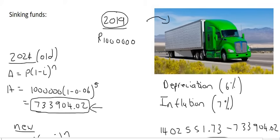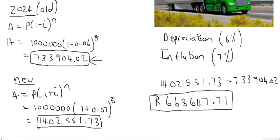The accountant approximates or estimates that the new truck that they will need to purchase is that amount. They'll be able to sell the old truck for that amount, and so they're going to need an extra R668,000.